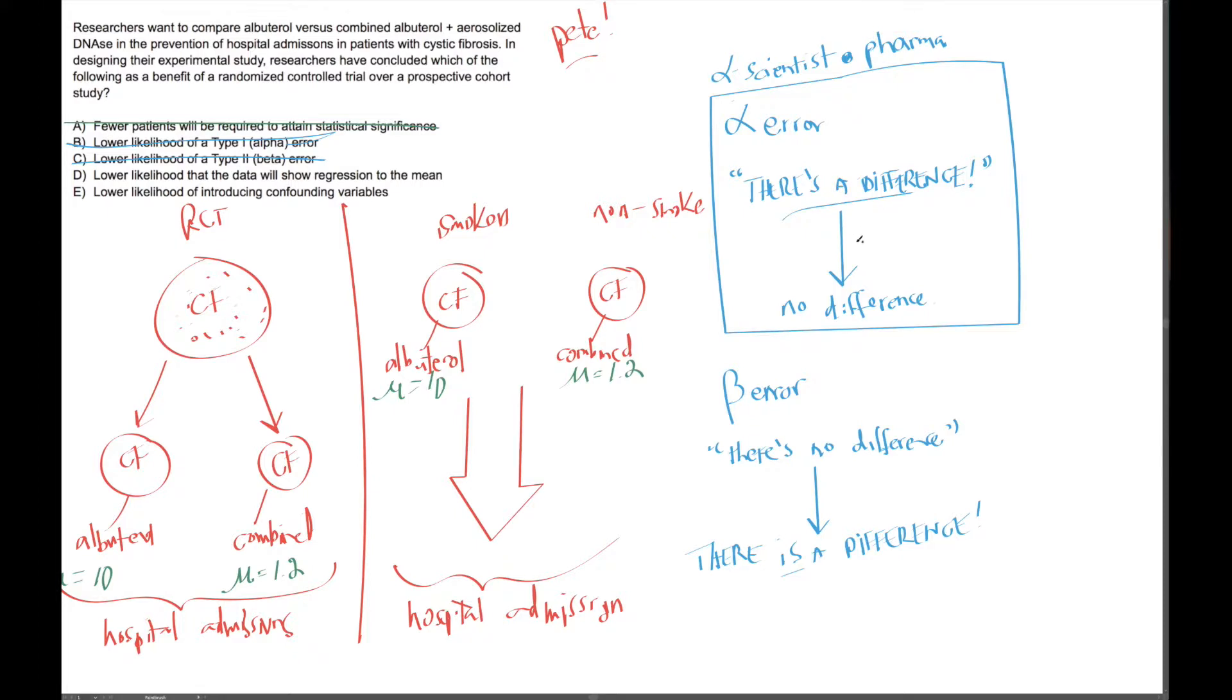So when you reject the null hypothesis, you're technically saying it is not the case that the two groups are the same. So that's a very roundabout but strict and logical way that we discuss the findings of statistical studies.